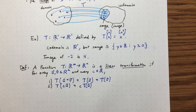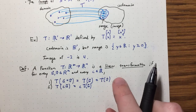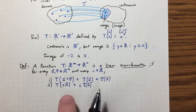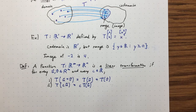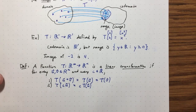Property one: T(U + V) = T(U) + T(V). Property two: T(C·U) = C·T(U). These two properties together define a linear transformation. This might look a little abstract at first, but there's a very beautiful geometric picture for what's going on here, which we'll talk about in a second. But first, let's get used to working with these two properties.